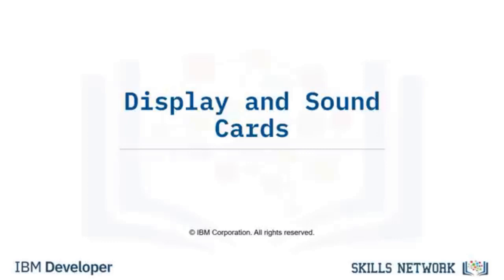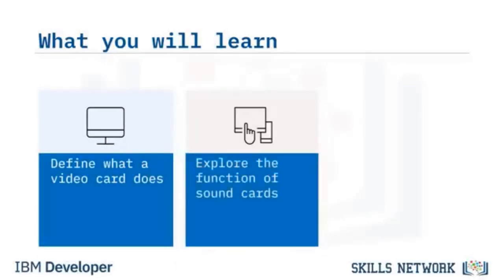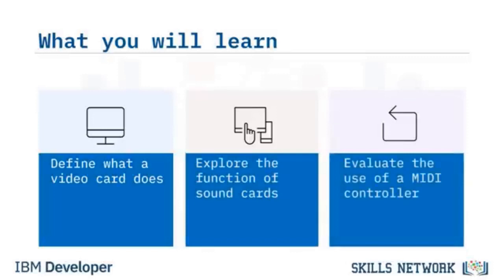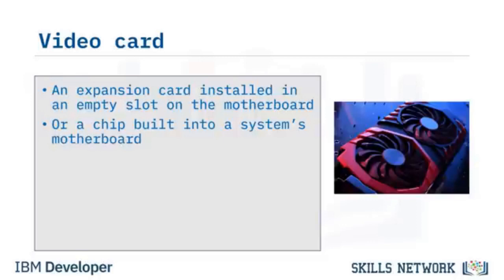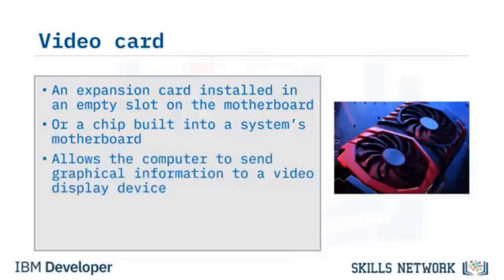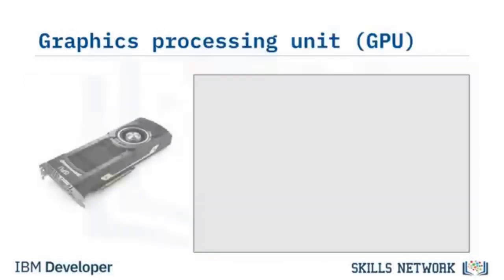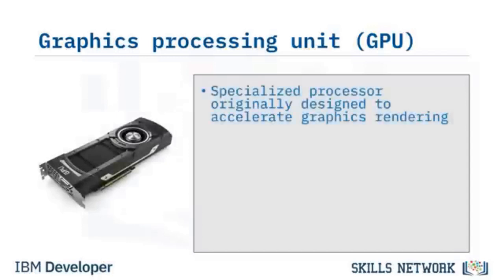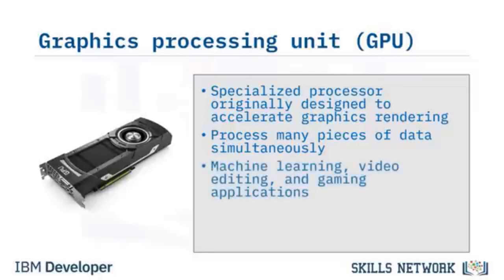Welcome to Display and Sound Cards. After watching this video, you will be able to define what a video card does, explore the function of sound cards, and evaluate the use of a MIDI controller. A video card is either an expansion card in an empty slot on the motherboard or a chip built into a system's motherboard. It allows the computer to send graphical information to a video display device such as a monitor, TV, or projector. A video card is also known as a display adapter, graphics card, video adapter, video board, or video controller. A graphics processing unit, or GPU, is a specialized processor originally designed to accelerate graphics rendering. GPUs can process many pieces of data simultaneously, making them useful for machine learning, video editing, and gaming applications.